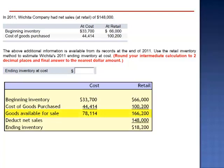And what we do is we look at the relationship between cost and retail at the available for sale level. If you take $78,114 and divide by $166,200, the relationship between cost and retail is 47%. Cost is 47% of retail. And if that relationship applies at goods available for sale, it also applies to the ending inventory — the cost is 47% of the retail. So if we take $18,200 multiplied by 47%, ending inventory at cost is estimated to be $8,554.